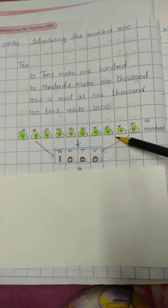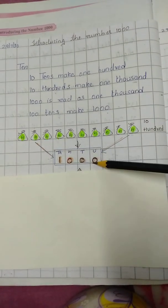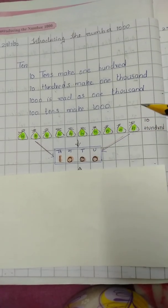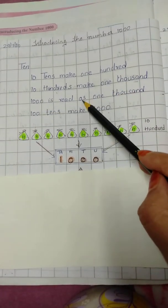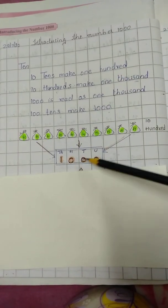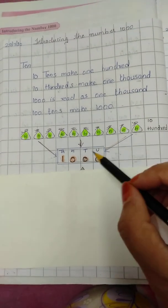Thik hai? So how many hundreds make a thousand? It is 10 hundreds that make a thousand. Thousand is read as 1000. Aap isko kaise read karoge? 1000. Aap isko kaise likhoge? Toh aap ko iss tarah se likhna hai.